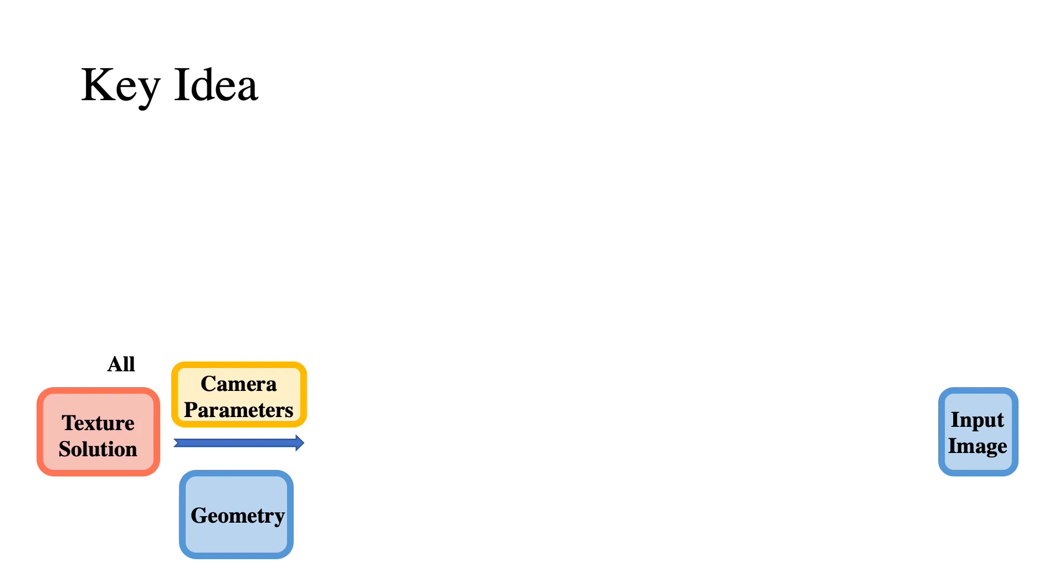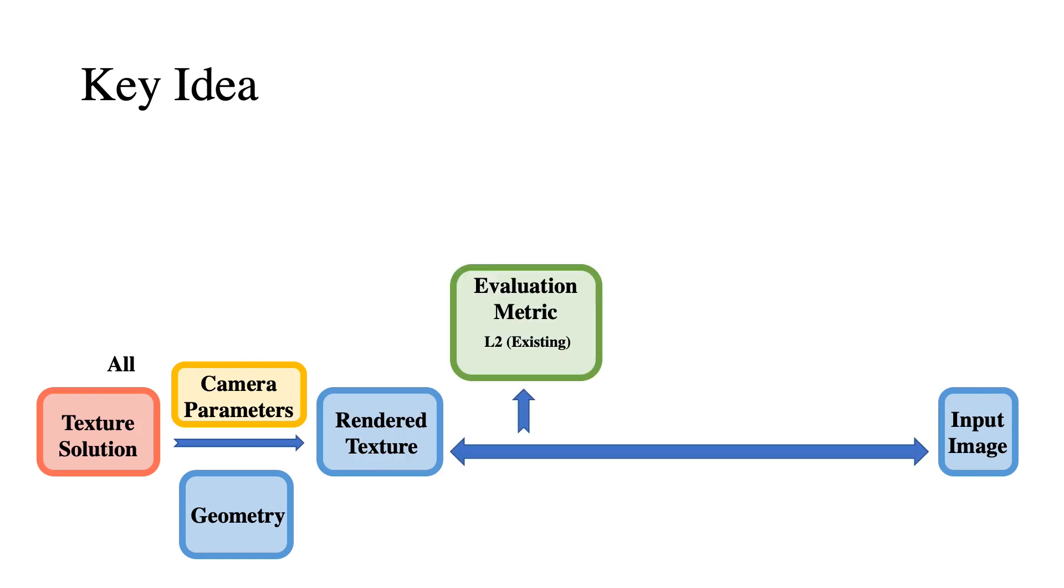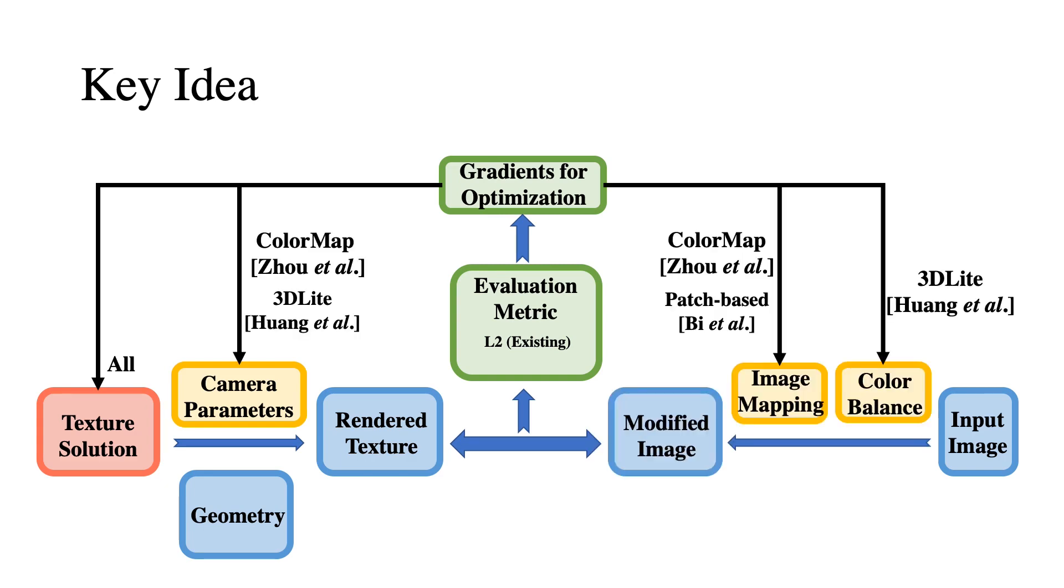All methods take input images and geometry and produce a texture solution. The standard pipeline projects the object texture via camera as the rendered texture, compares to the input view under the L2 metric, and optimizes texture by minimizing the loss. To handle misalignments, existing methods additionally optimize camera parameters, image warping, or color balance.